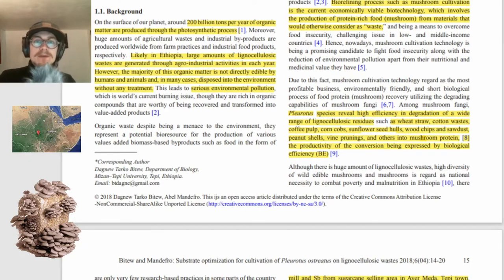On the surface of our planet, around 200 billion tons per year of organic matter are produced through the photosynthetic process. Likely in Ethiopia, large amounts of lignocellulosic wastes are generated through agro-industrial activities in each year. However, the majority of this organic matter is not directly edible by humans and animals and, in many cases, disposed into the environment without any treatment.